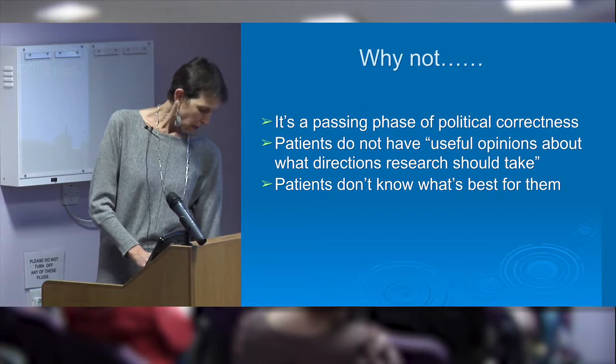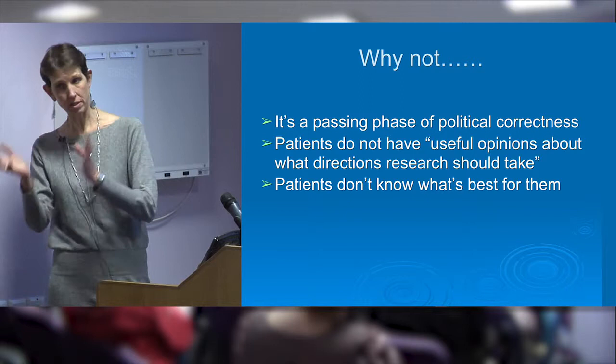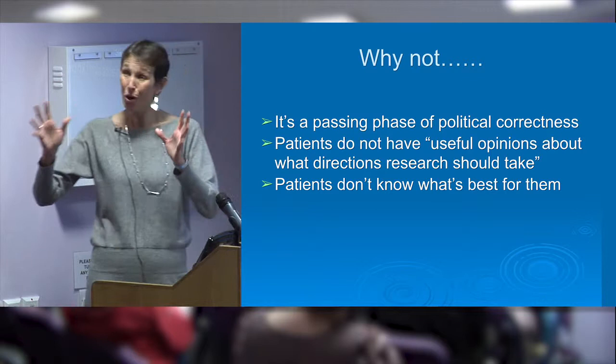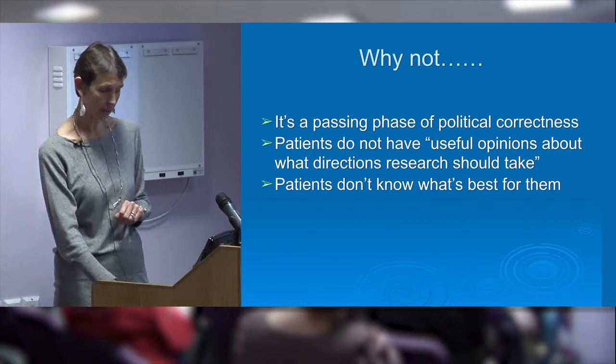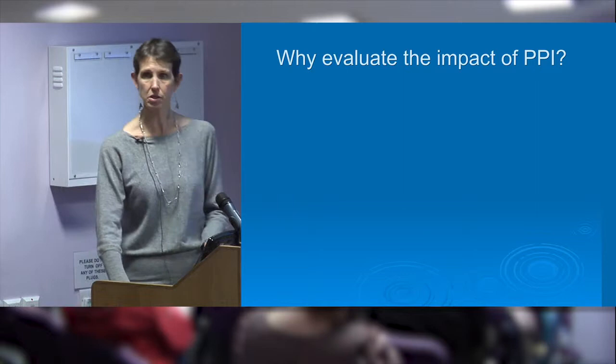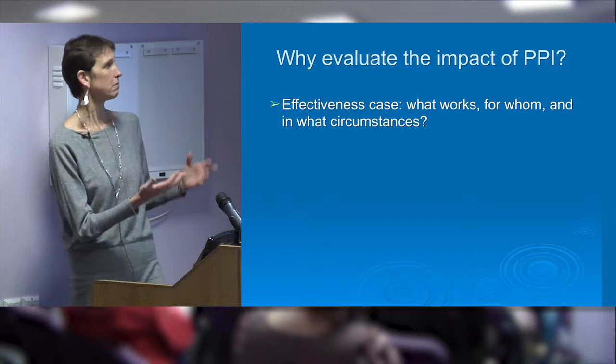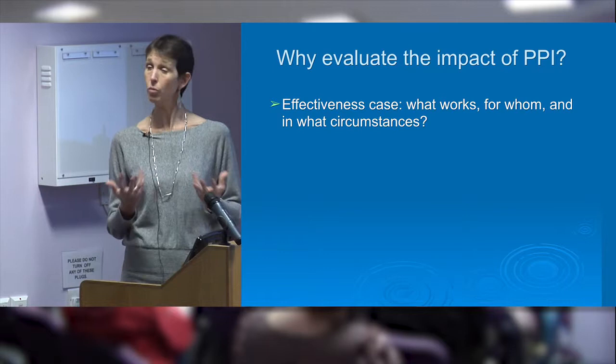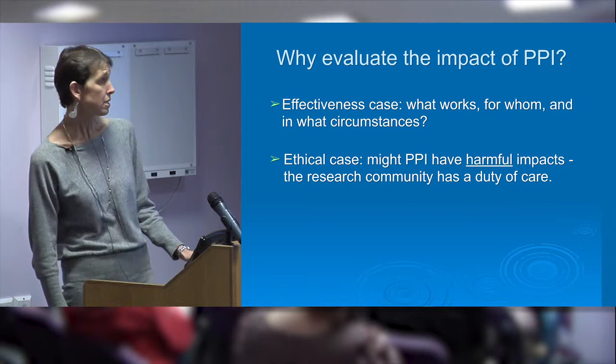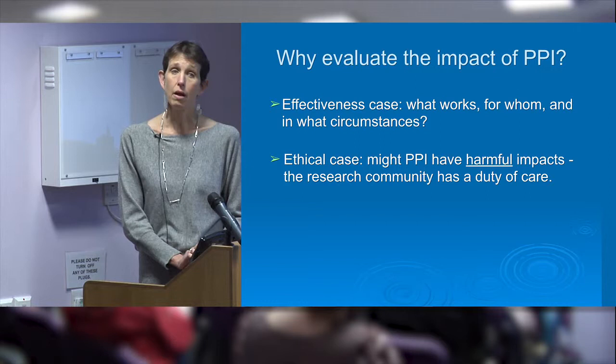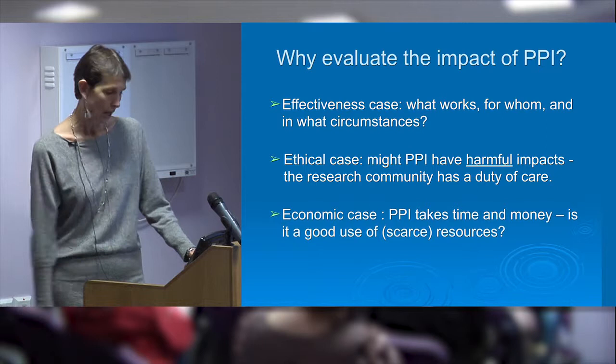Some of you will know about PROMs - Patient Reported Outcome Measures. There's a growing emphasis on saying PROMs aren't really up to much because they take an outcome measure identified as important by a researcher and then get patients to measure it. What we actually need is to get patients to identify or generate the outcome measures themselves - moving from PROMs to PIoms, Patient Identified Outcome Measures, or patient-generated outcome measures. We need to evaluate PPI - for the effectiveness case (what works for whom), the ethical case (it is possible PPI is harmful, and researchers have a duty of care), and the economic case (it takes time and money).